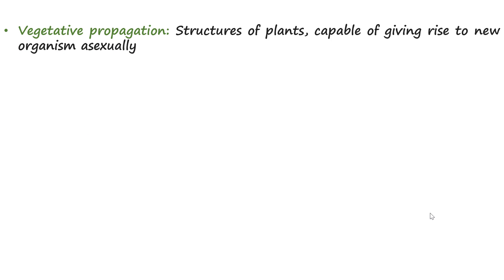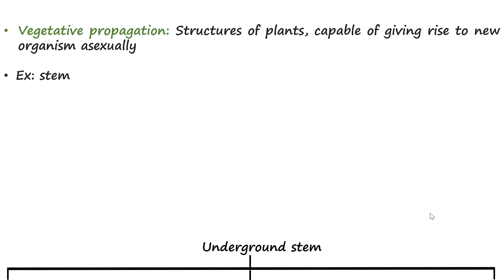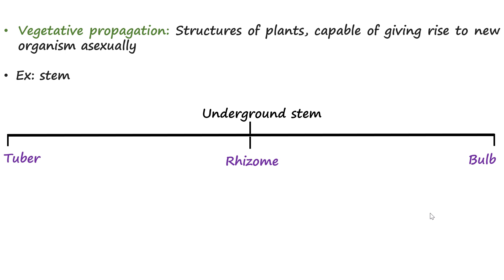In vegetative propagation, different plant parts other than the flower give rise to a new plant. The stem is one such part that can generate a new plant. When the stem goes underground, it can generate a tuber, rhizome, or bulb.